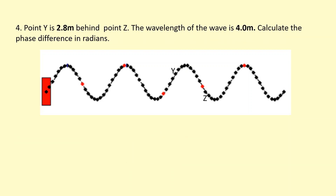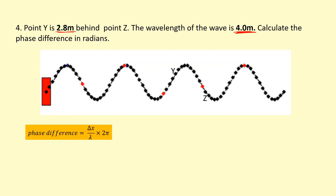Now point Y is 2.8 seconds behind point Z, and the wavelength is 4 meters. Calculate the phase difference in radians. Phase difference is a fraction of a cycle — one point is ahead or behind another. In this case, a whole cycle is 4 meters, the wavelength, and we're 2.8 meters into it. Using the equation: the difference in distance divided by the wavelength, times 2 pi. So 2.8 divided by 4, times 2 pi, gives us 4.4 radians.